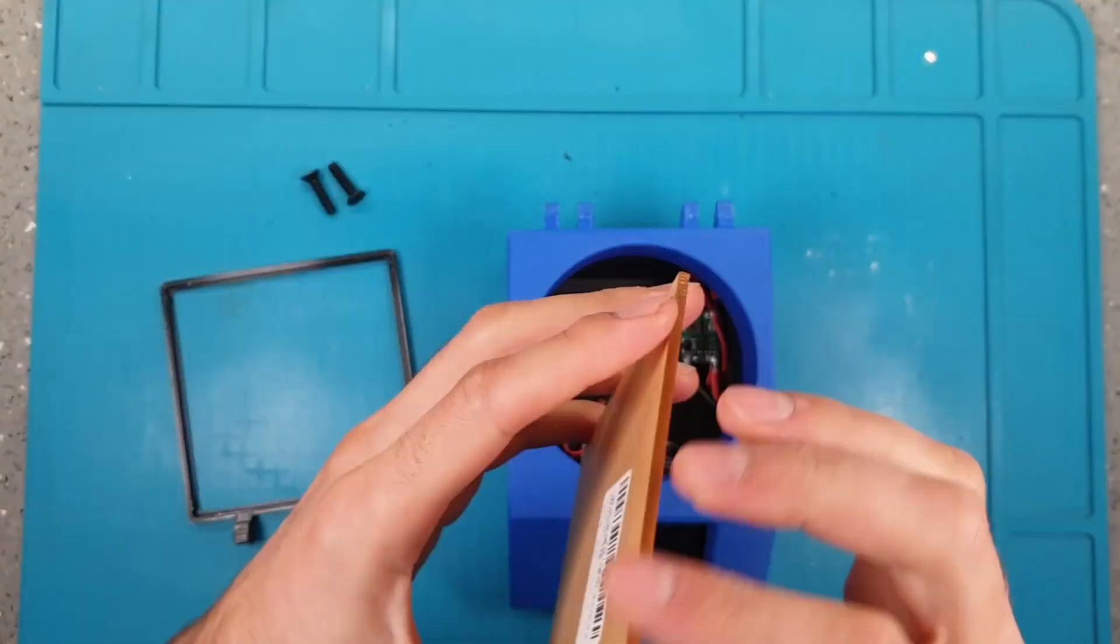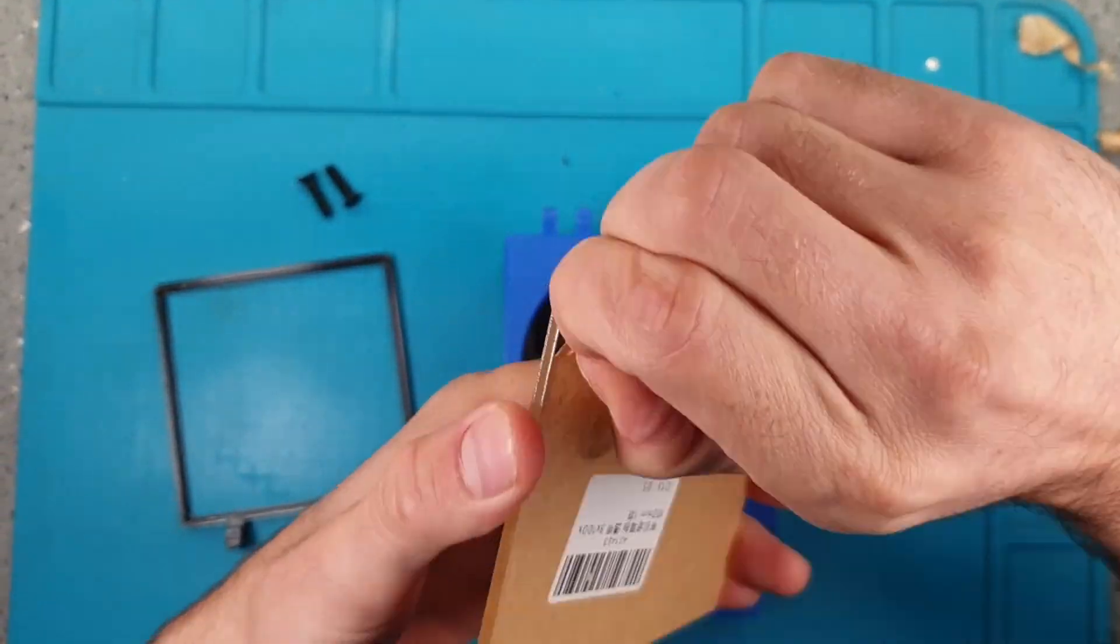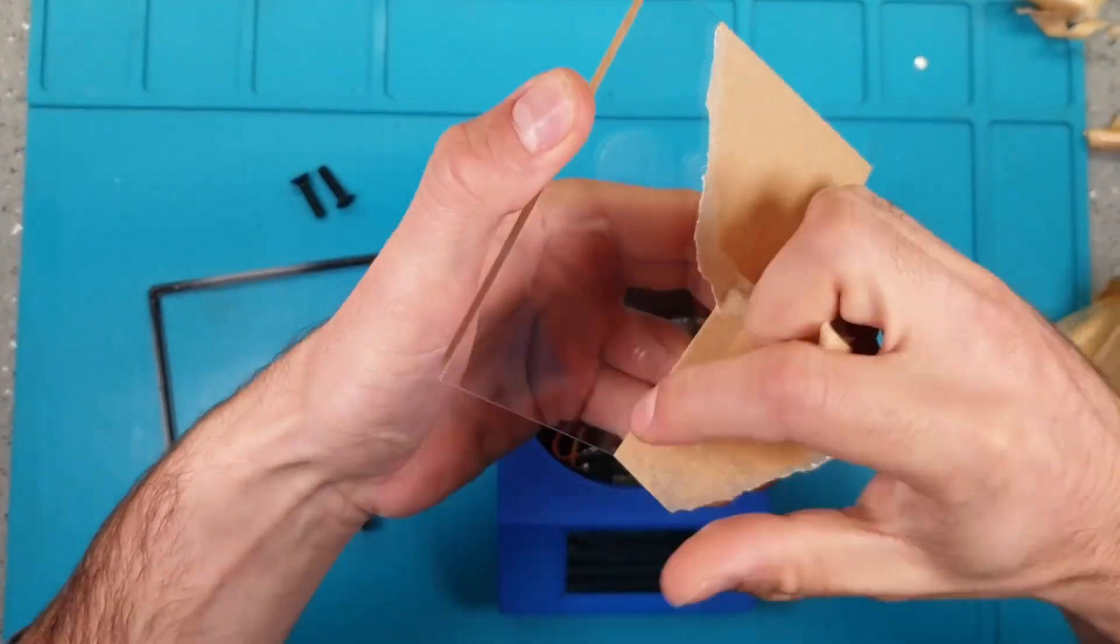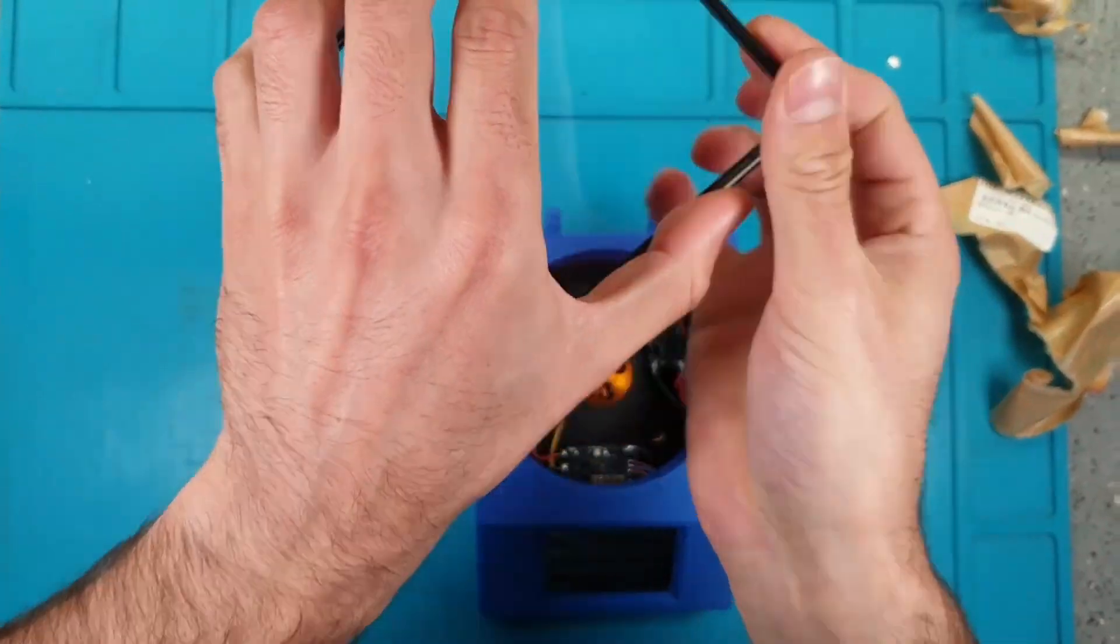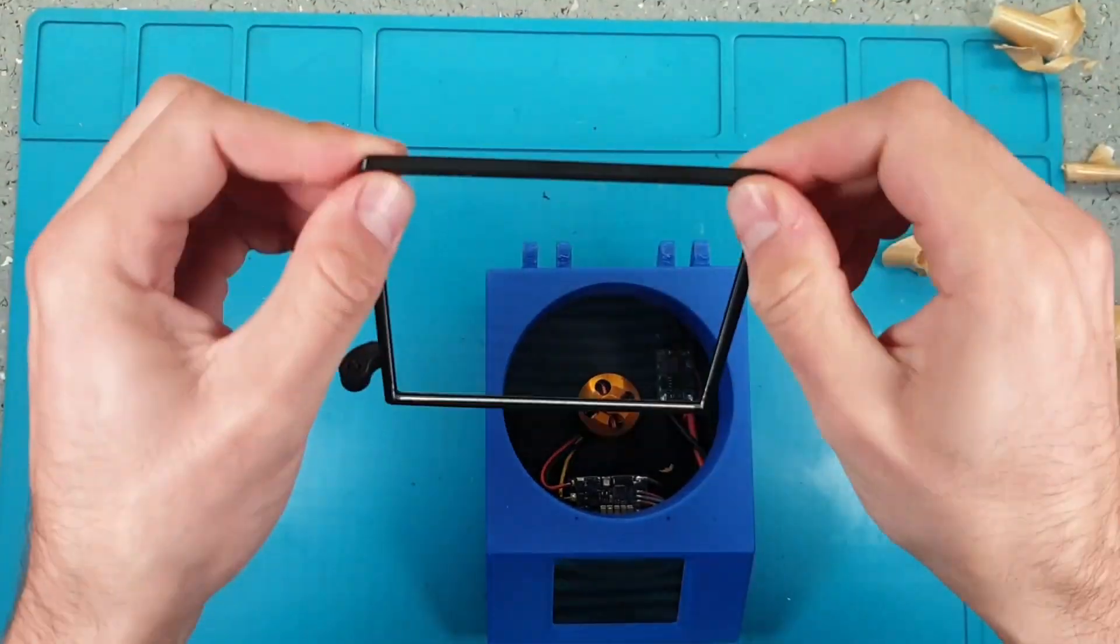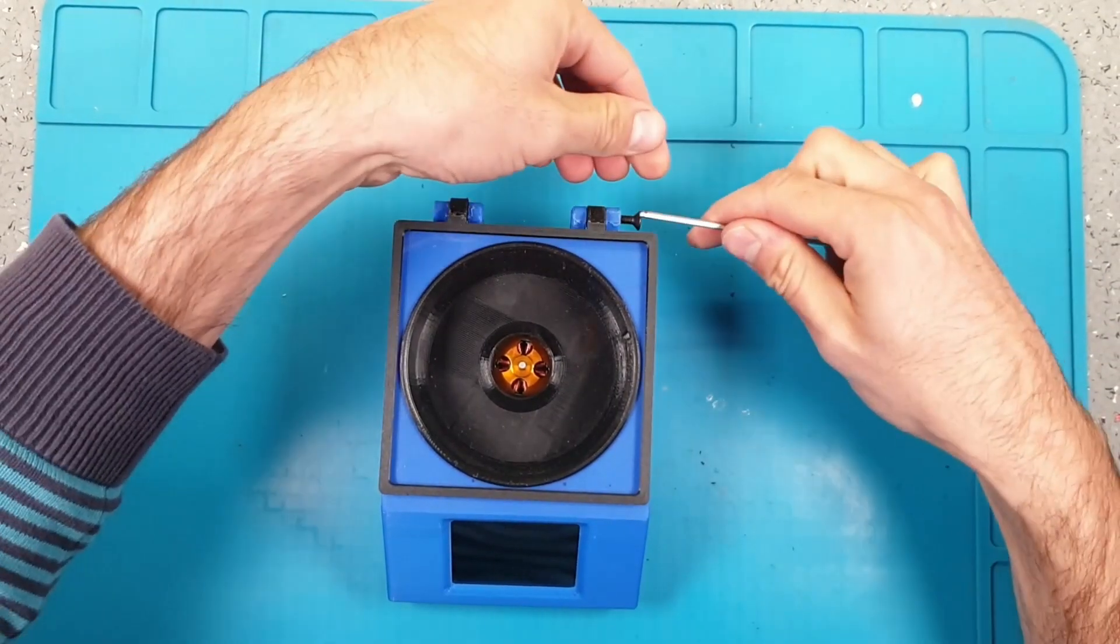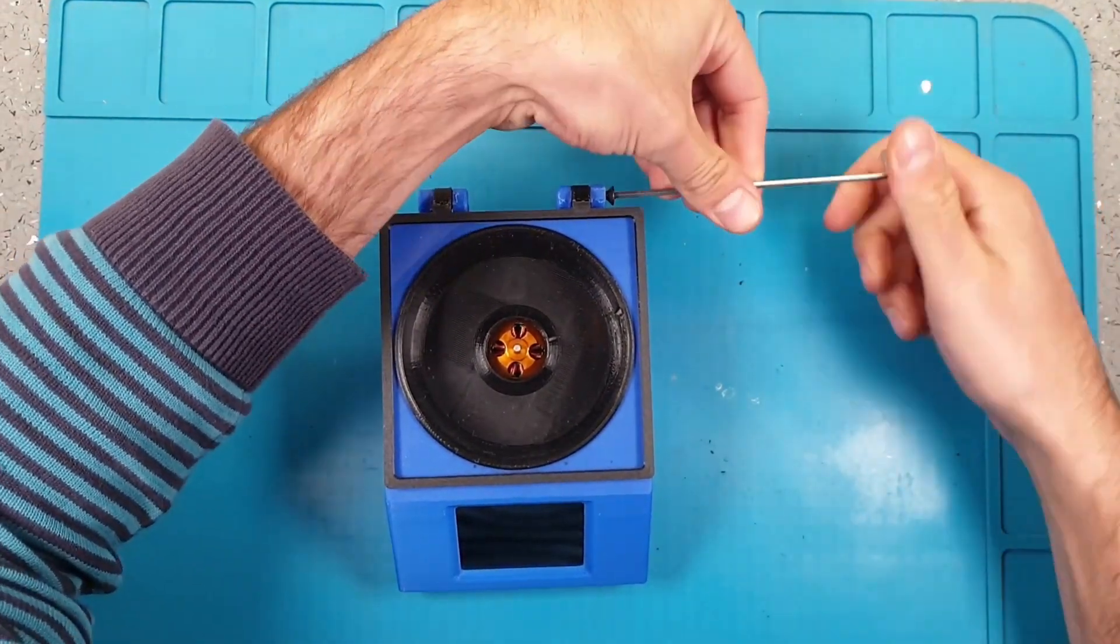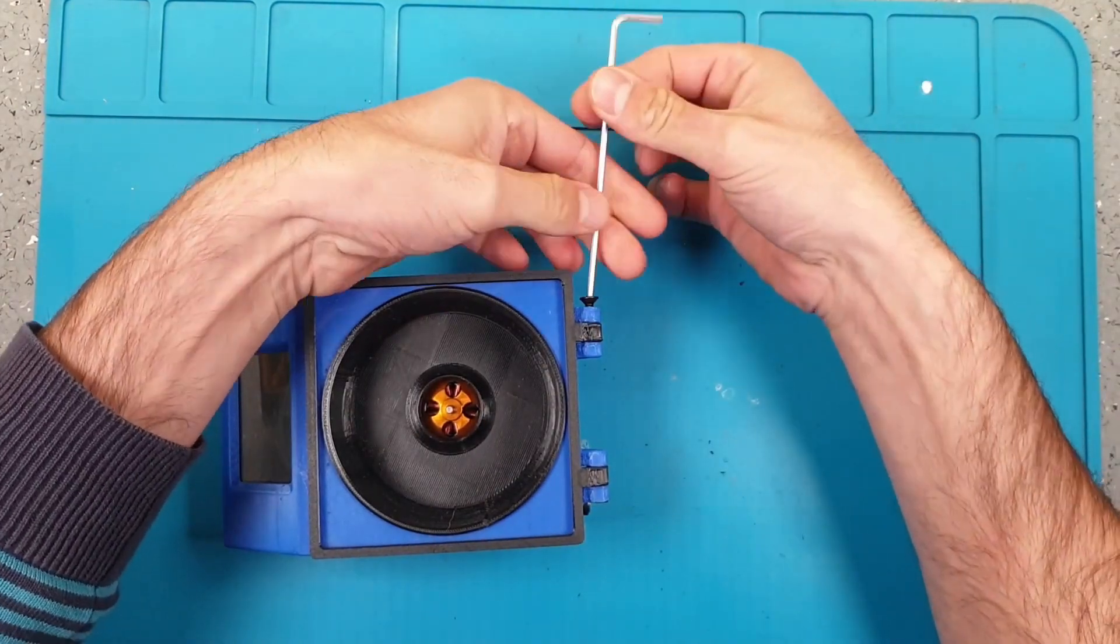We are almost done. Now we only have to prepare the lid. We just need to remove the protective film for the plexiglass and press fit it into the frame. To attach the lid to the housing we are going to use 20mm long M4 taper bolts.